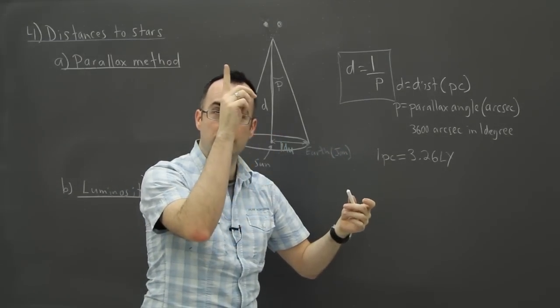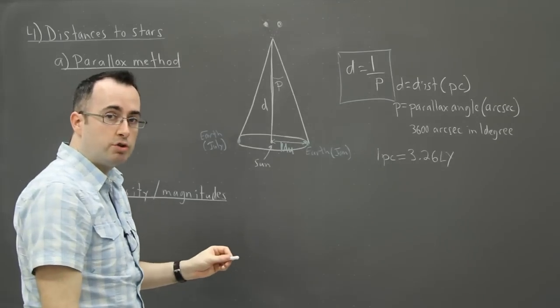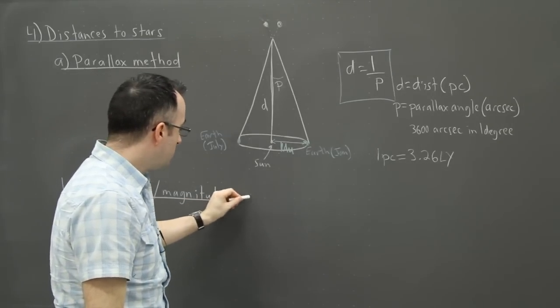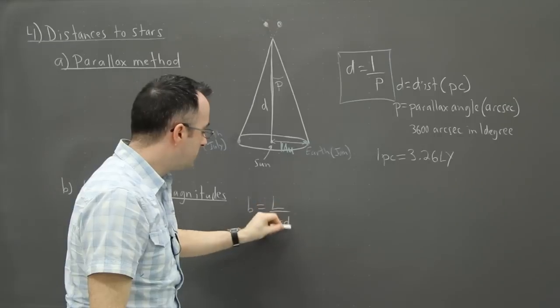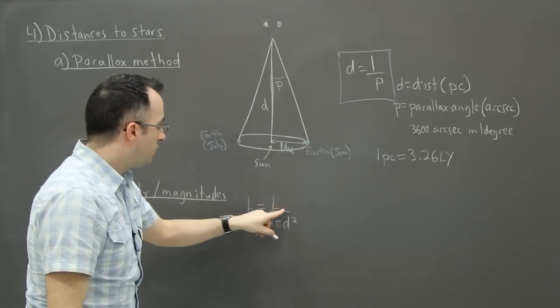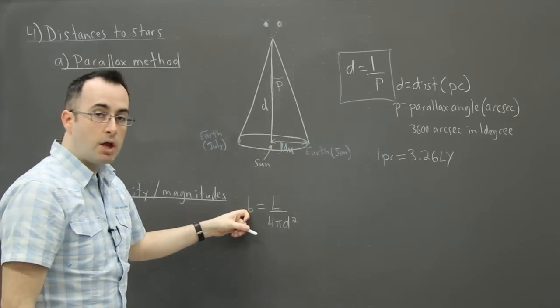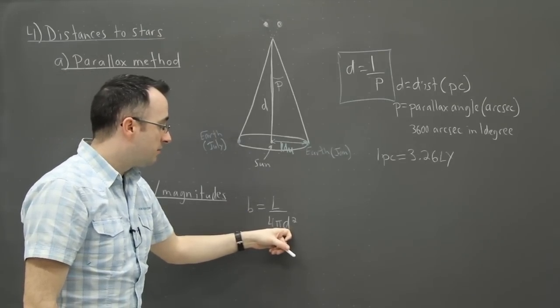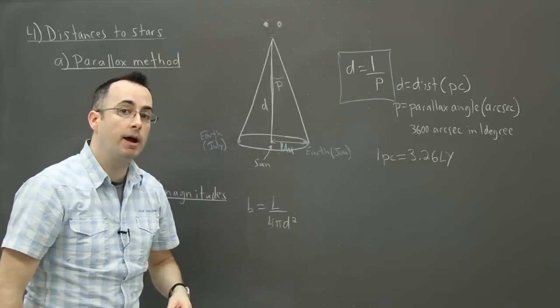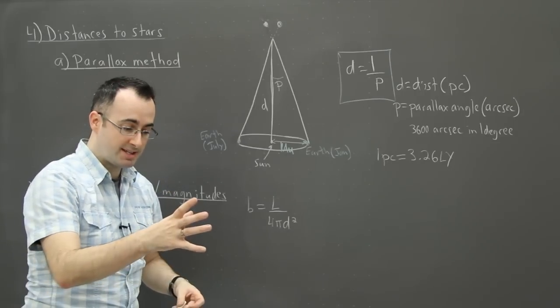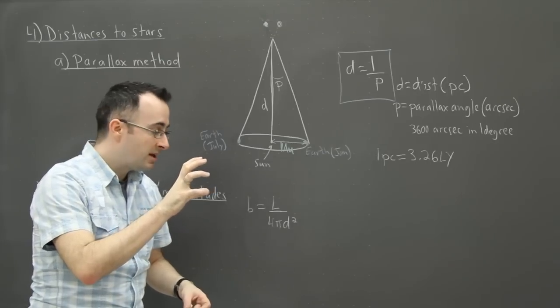Another way to tell is the methods I showed you earlier, with luminosity and magnitudes. This whole apparent brightness equals luminosity over 4πd² is one way. The way we actually do this is we measure the apparent brightness, we want to get the distance, but that means we need to know luminosity. But we can use the HR diagram. If we see something depending on its spectral class, we can take a spectrum of a star and look at what it's made of.